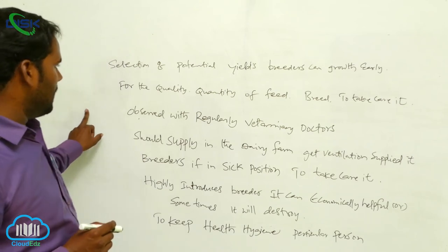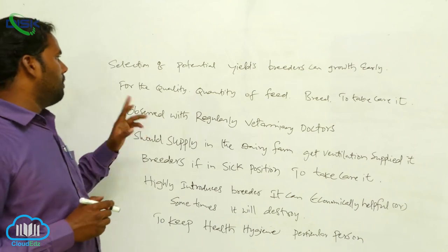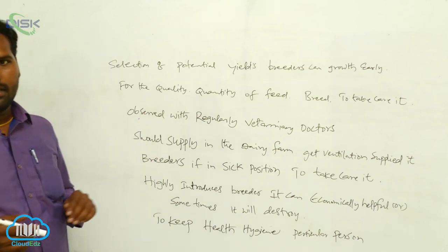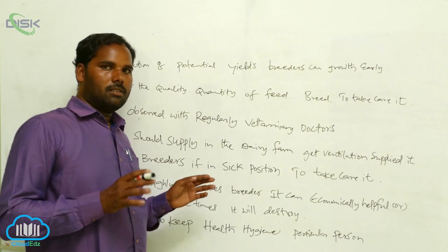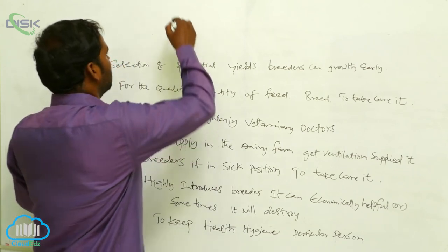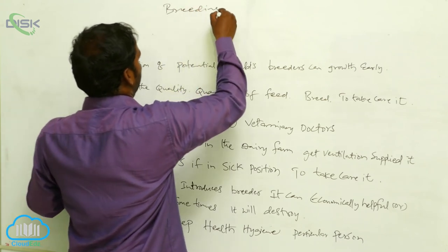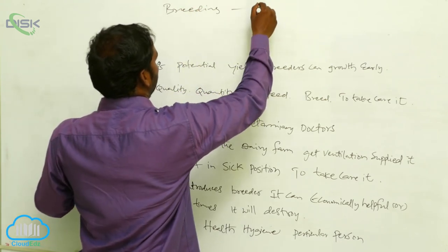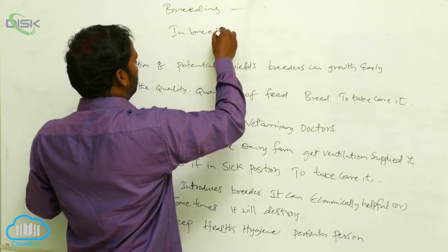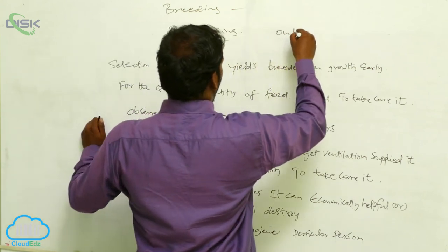Main utilization of breeders. It is the breeders. Next we discussed about the breeders — inbreeding and outbreeding. What is the breeding? Tomorrow's class we will discuss about the breeding: inbreeding and outbreeding.